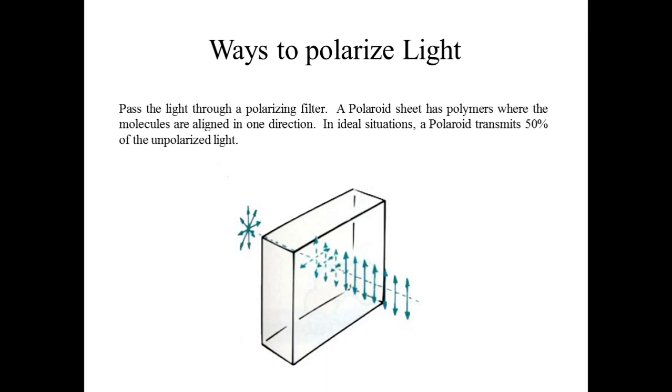As we can see in the figure, when unpolarized light passes through this polaroid sheet, we get polarized light. We get polarized light as it is traveling in one direction, with the electric field component vibrating in only one plane.